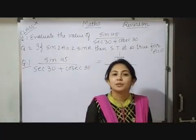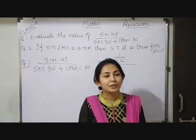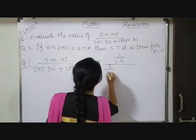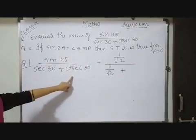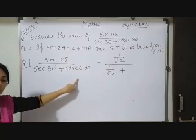As we know that sec is the reciprocal of cosine, so value of cos 30° is root 3 by 2, so value of sec 30° will be 2 upon root 3. Plus cosec 30°, that is the reciprocal of sin, and we know that value of sin 30° is 1 upon 2, so its reciprocal will be 2.